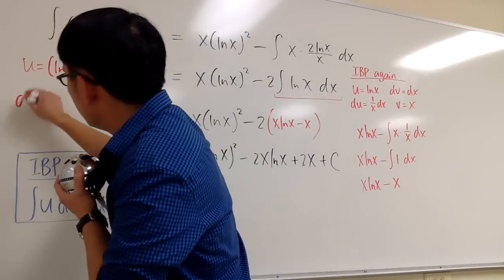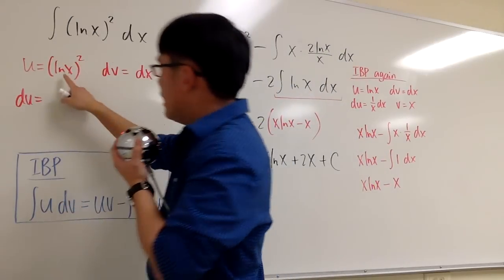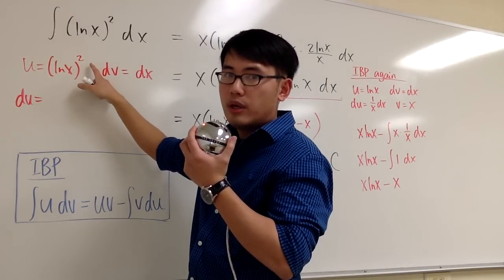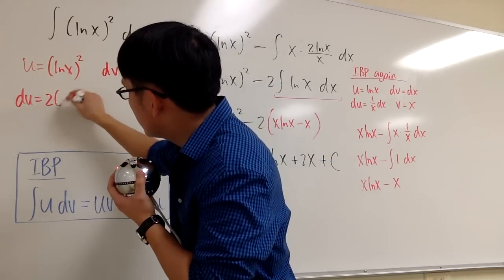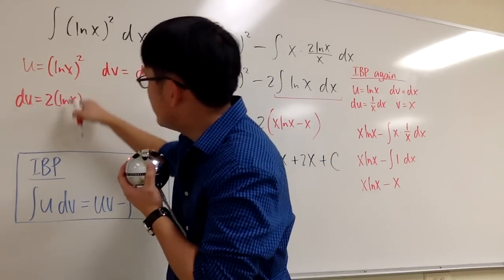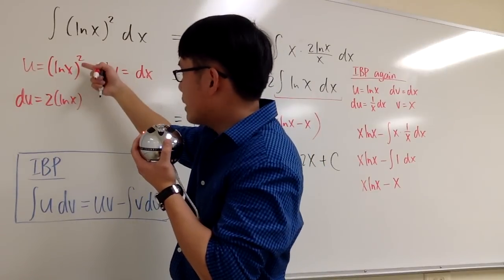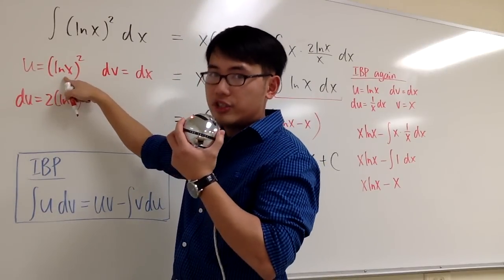So now here, I'm going to differentiate u, and this is ln x in the parentheses to the second power. We have to first bring the power to the front, so we have 2 times the inside stays the same. And then, because inside is more complicated, we have to use the chain rule.